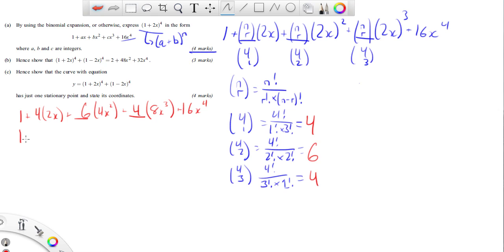And it says to write out this. So here, I'm just going to simplify this. 1 plus the 4 times the 2x is 8x plus 6 times 4 is 24x squared plus the 4 times 8 is 32x to the third plus 16x to the fourth. A, B, and C are in fact integers. This is the correct answer. And that's worth four marks for part A.